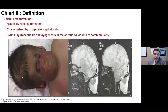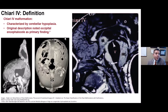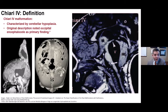Chiari III is relatively rare — also a dysraphic condition categorized by encephalocele, with brain contents herniating out of the back, and other nervous system malformations. Chiari IV is perhaps even more rare; we see cerebellar hypoplasia, where the cerebellum is incompletely developed. These individuals often have lacunar skulls that are not completely formed, which can result in herniations of the cerebrum.